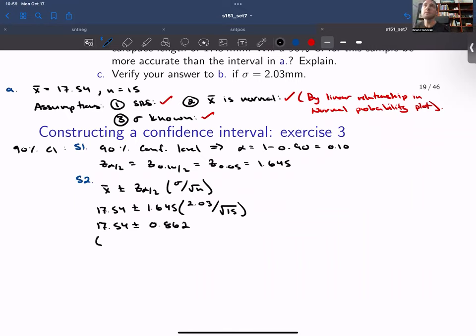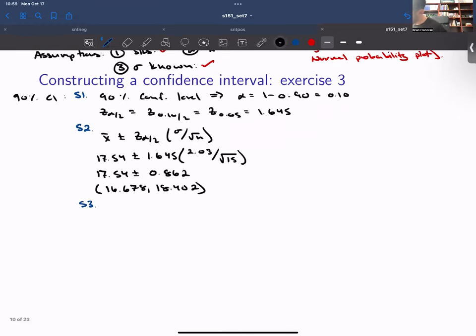So we add and subtract this value, and we have 16.678 to 18.402. All right, so then we can say,